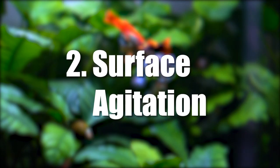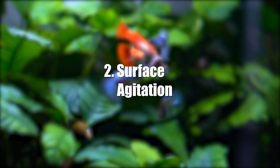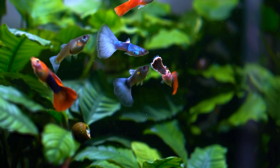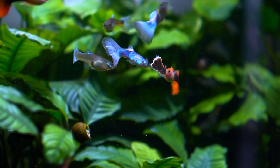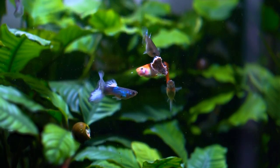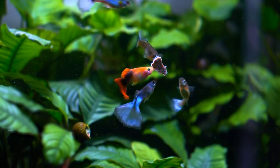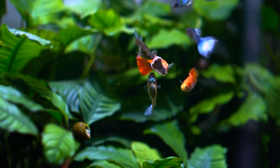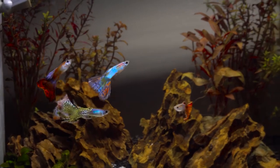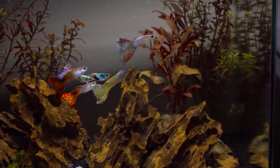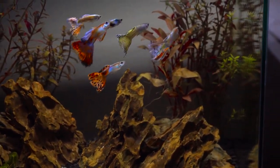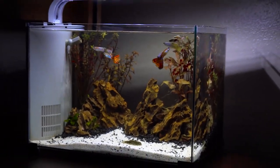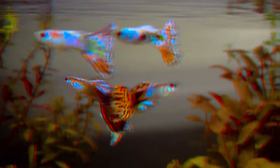Number two: surface agitation. Another way to add oxygen to a fish tank is through surface agitation. This can be achieved by placing a filter or air stone near the surface of the water, or by using a powerhead or water pump to create surface disturbance. The agitation helps to break the surface tension of the water, allowing more oxygen to enter the water from the air.